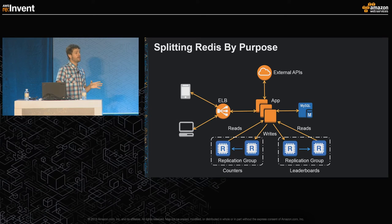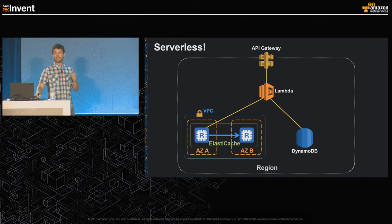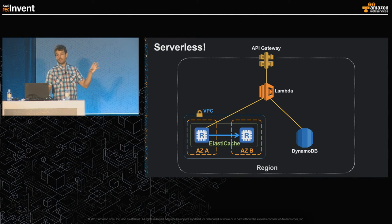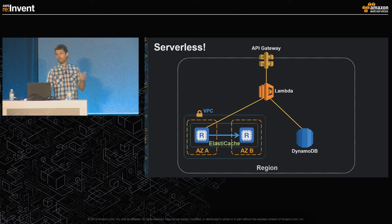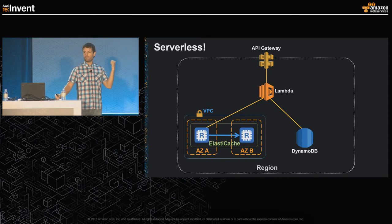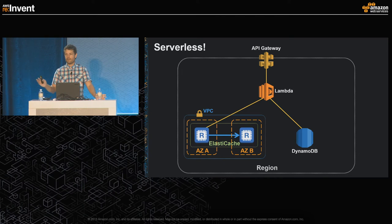We just pre-announced this morning as part of Werner's keynote: support in Lambda for VPC. By the end of this year you'll be able to set up an ElastiCache cluster in VPC and have any Lambda function access it — working for both Redis and Memcache. The Lambda team has a prototype demo where a Lambda function accesses an ElastiCache Redis cluster via VPC support. If you geek out on serverless architectures, you'll be able to use ElastiCache as well in very short order.